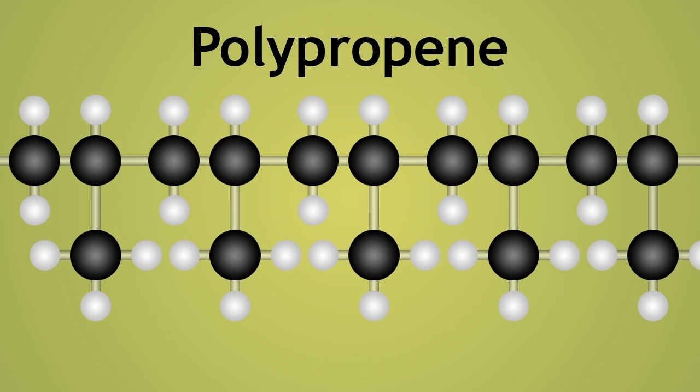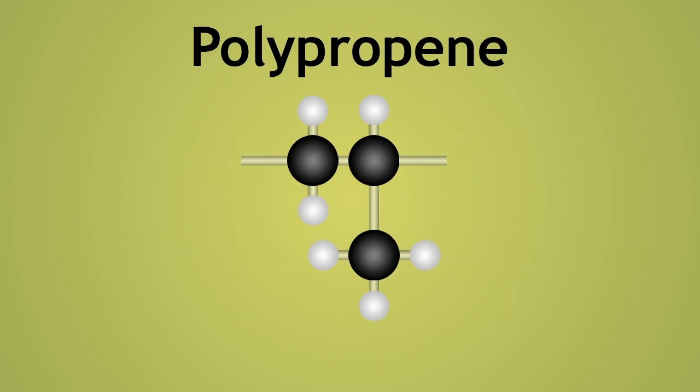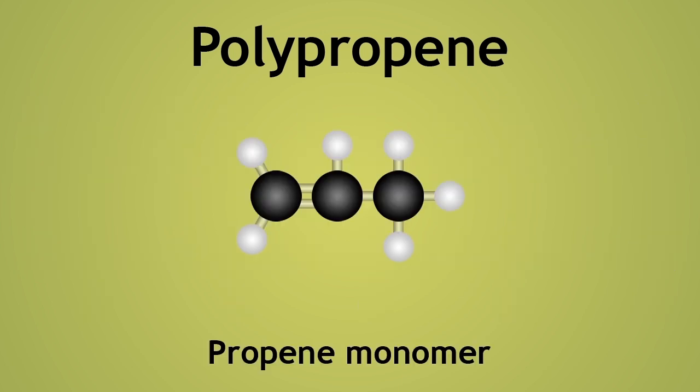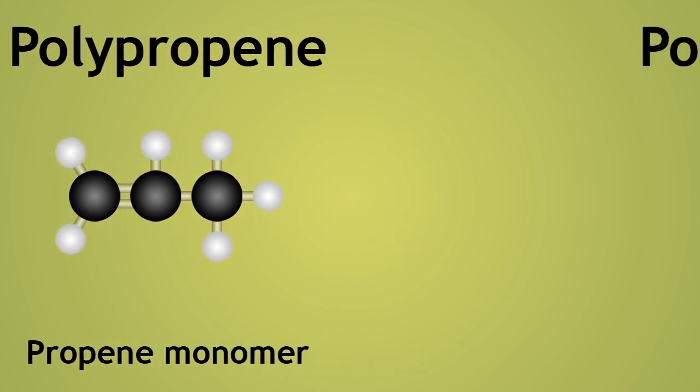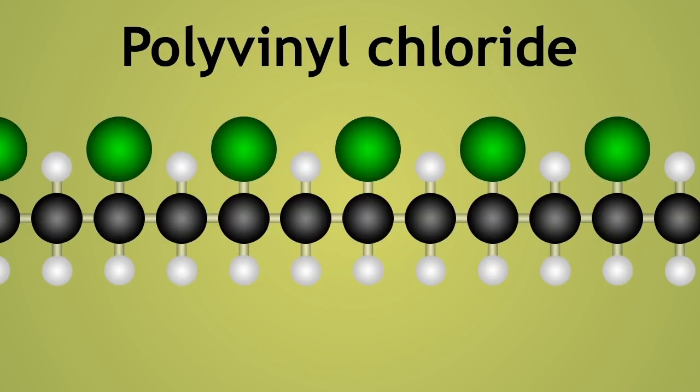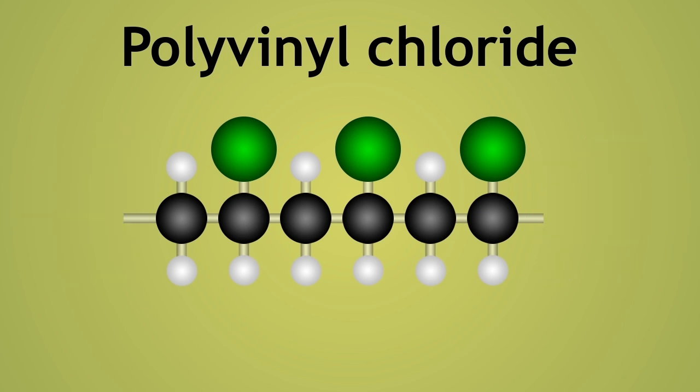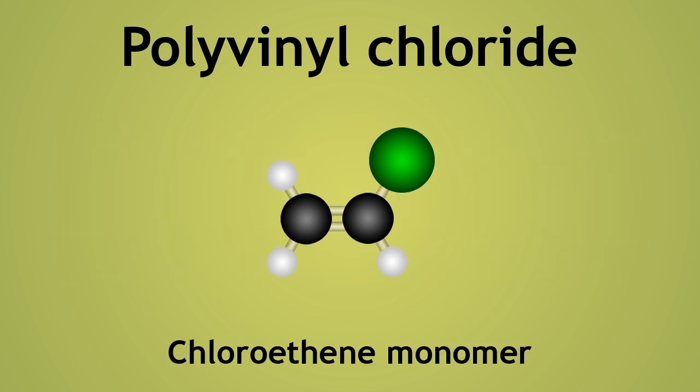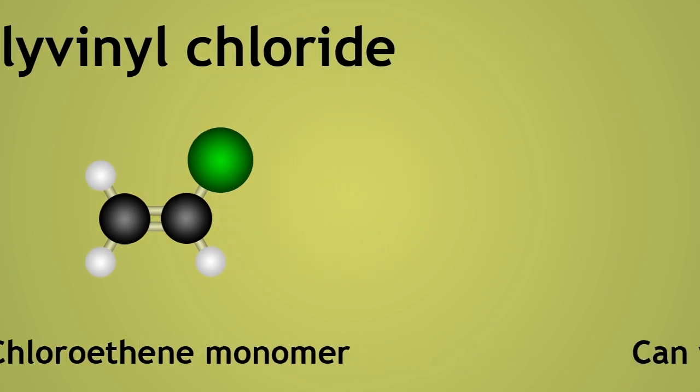Polypropene, or polypropylene, is a polymer of propene monomers. Polyvinyl chloride, or PVC, is a polymer of chloroethene, or vinyl chloride monomers.